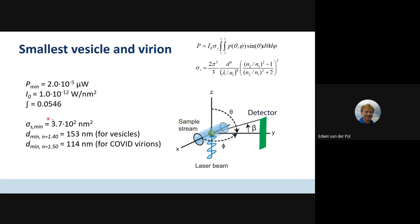As an in-between answer, I first calculated the minimum scattering cross-section measurable with this flow cytometer: 3.7×10² nm². That corresponds to vesicles with a refractive index of 1.40 and a diameter of 153 nm. For a COVID particle — which has a slightly higher refractive index due to being a denser particle with more proteins — it would correspond to 114 nm.